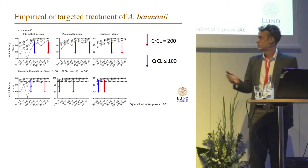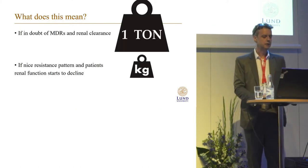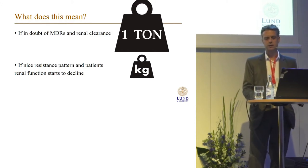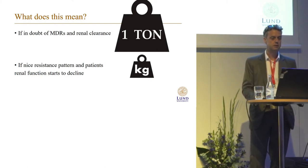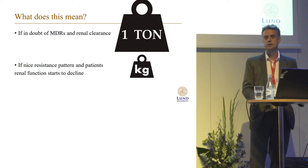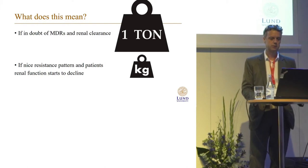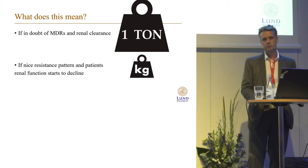What does all this mean? If you're in doubt about multi-resistant organisms and have a patient with high renal clearance, you should use fairly large amounts of antibiotics. If, however, you have nice resistance patterns in your community and a patient who is on the decline in renal function, then you can likely go for the more normal, standard dosing. A creatinine clearance of 200 seems high — is it really relevant?